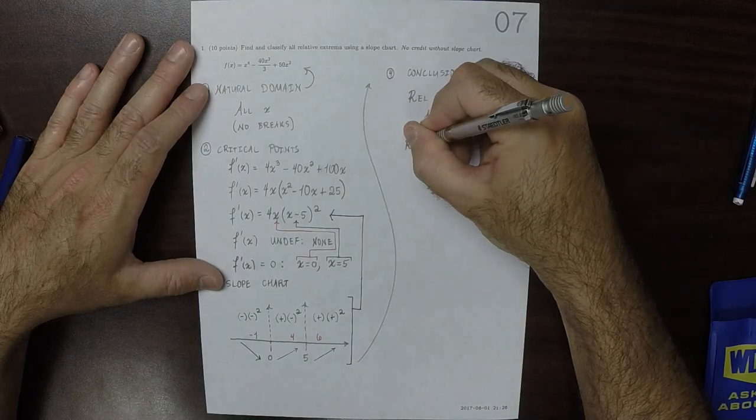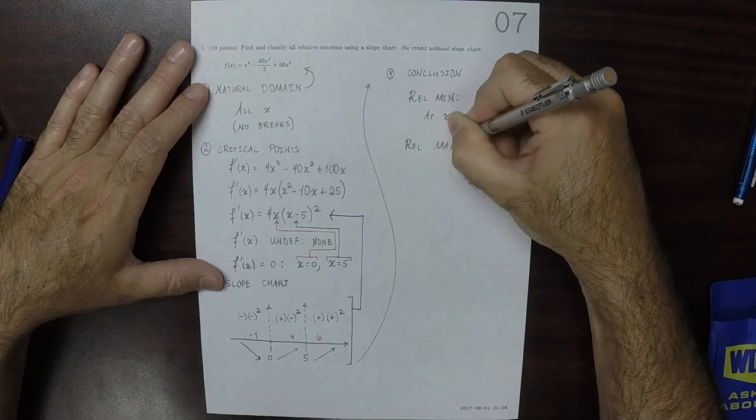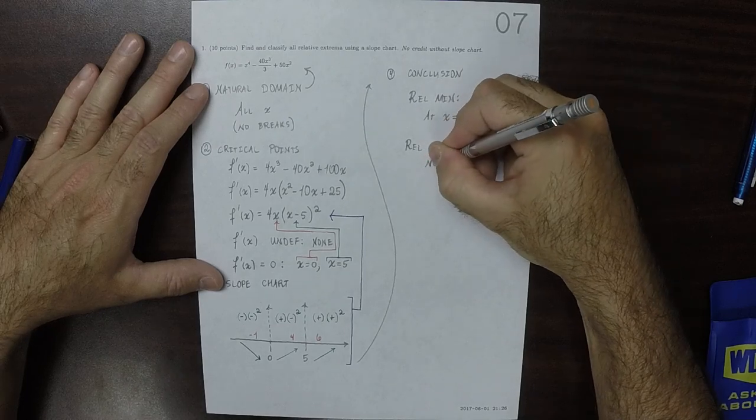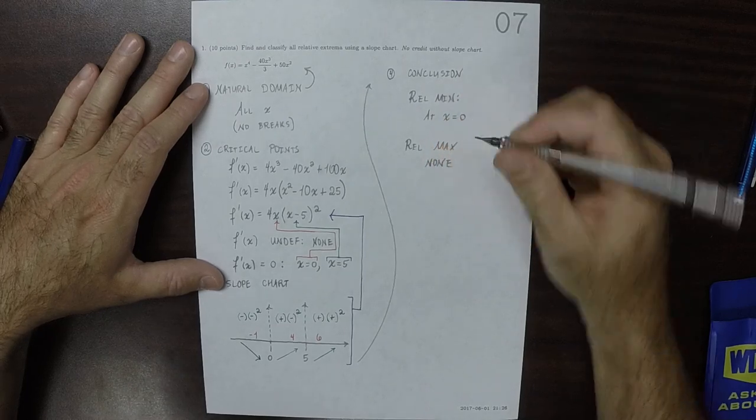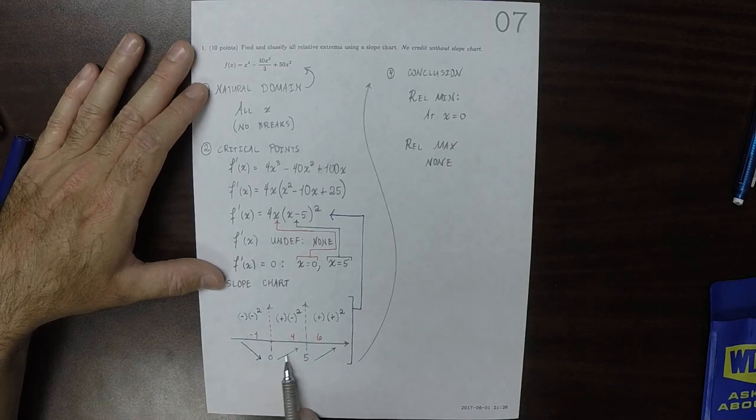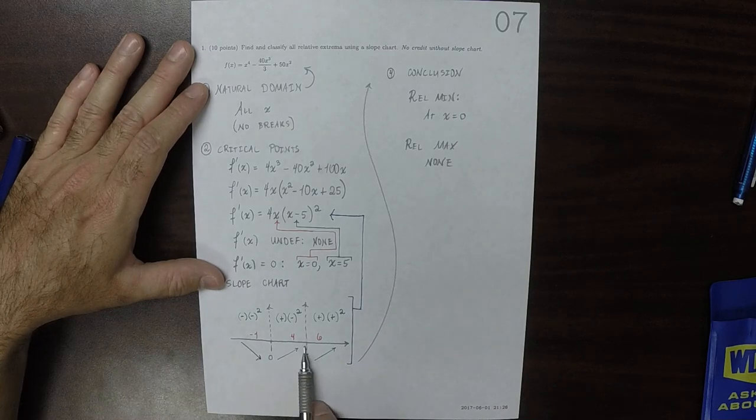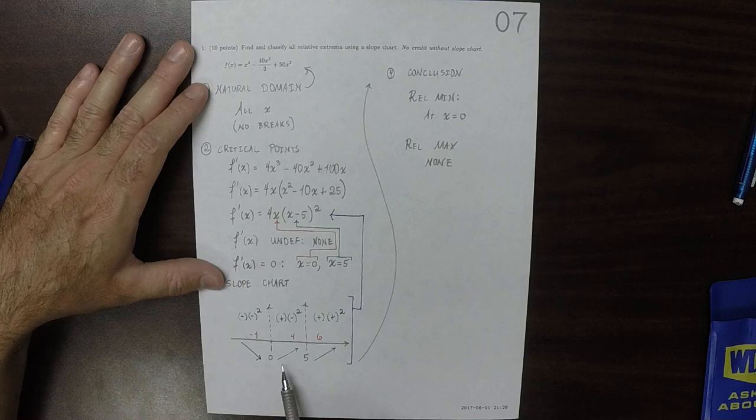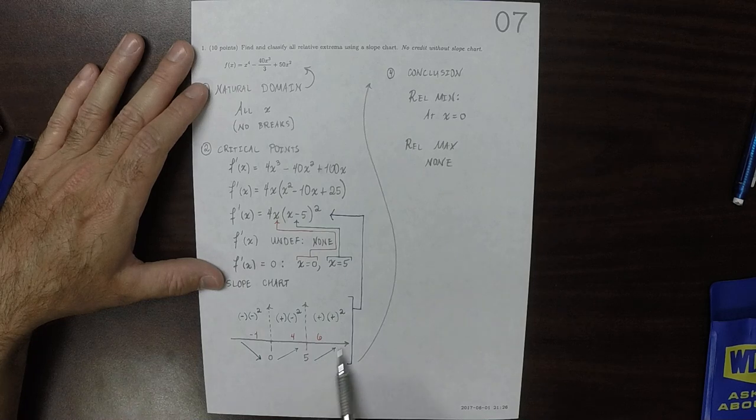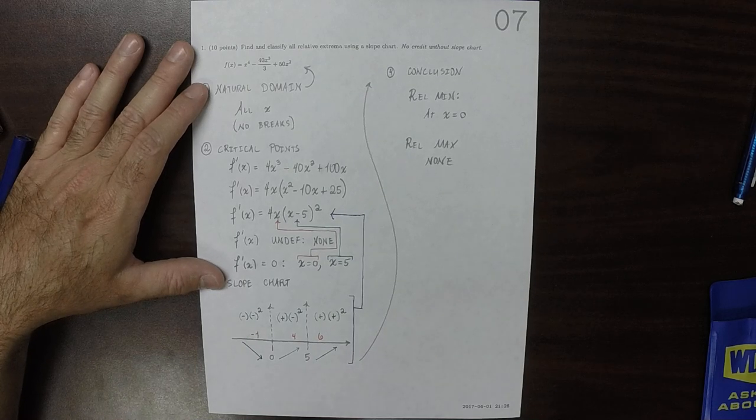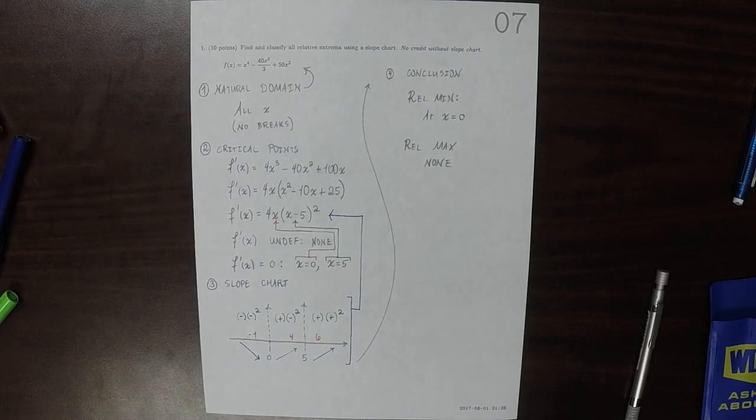And as for the relative max, there are none. There's none, because you can see that here this is a valley, decreasing to increasing. But there's no hills, so this is increasing and then increasing some more. So there's no relative max. And that's the answer.